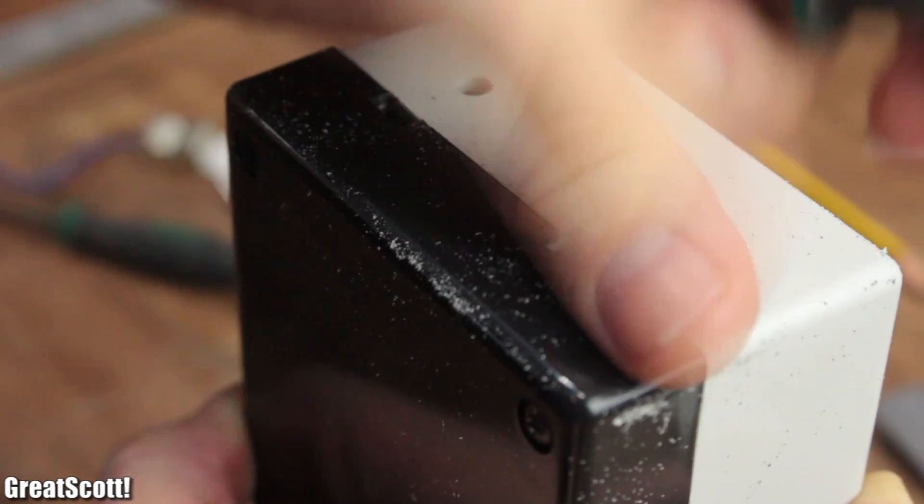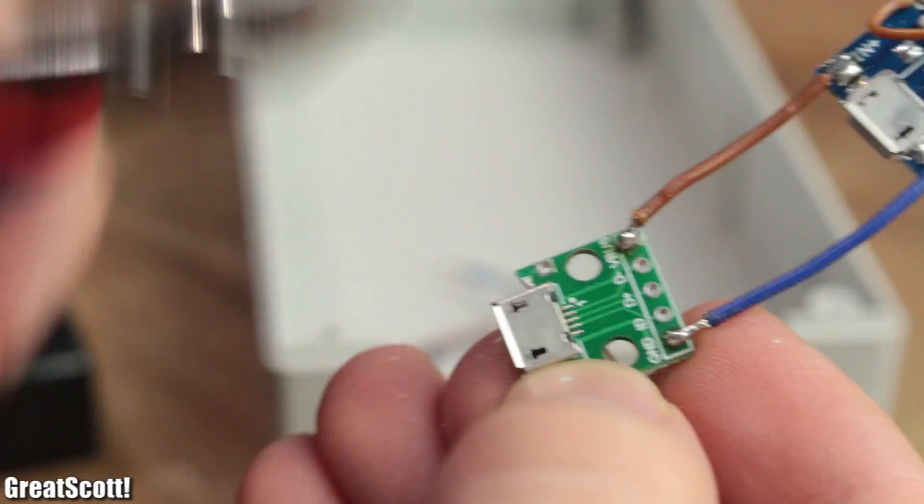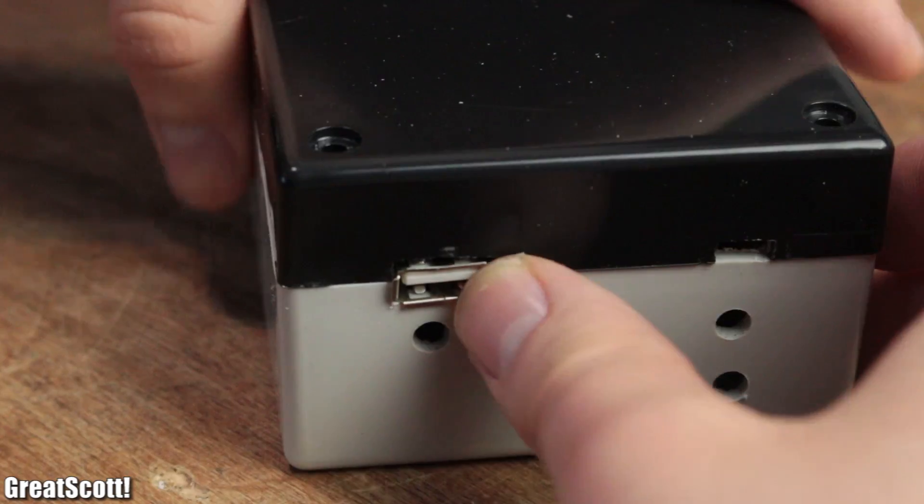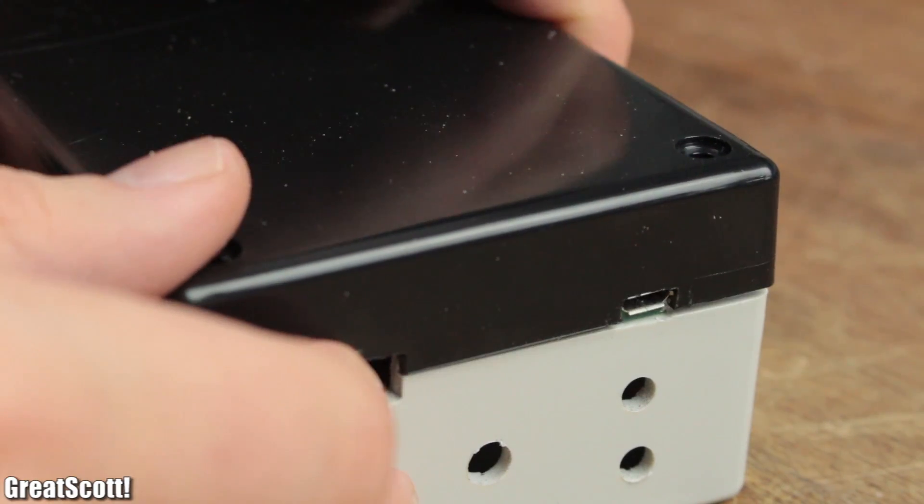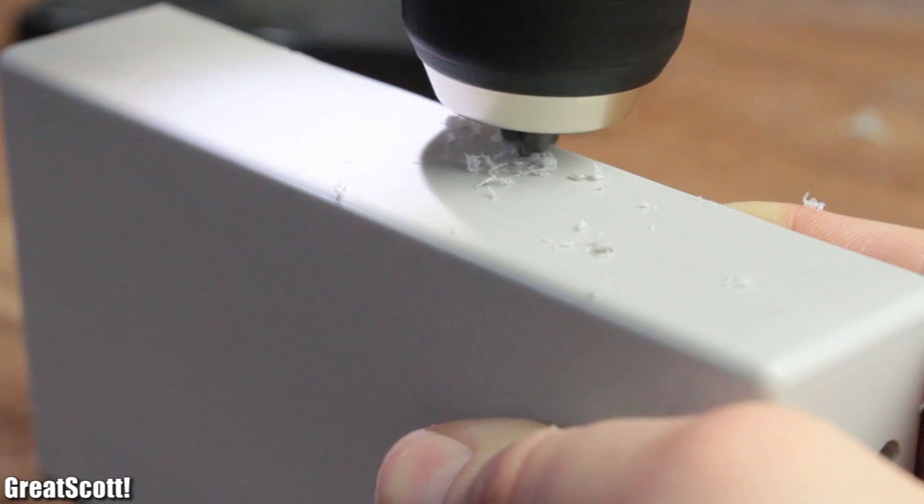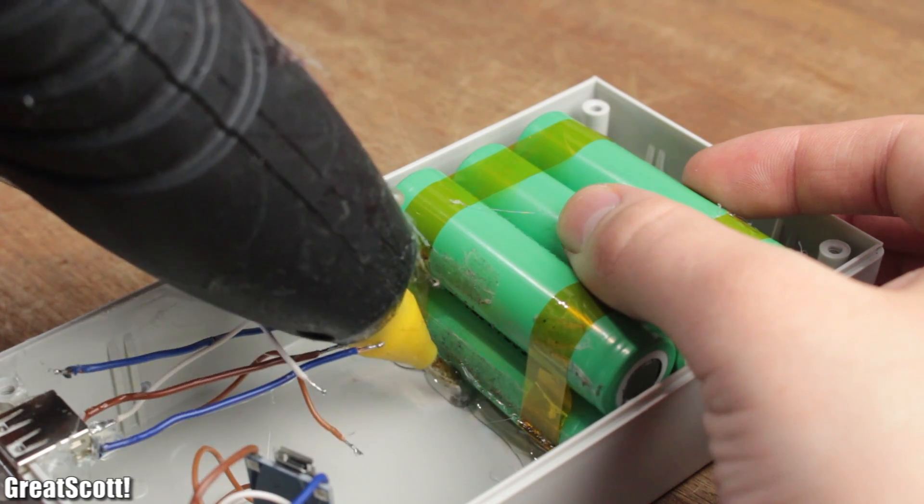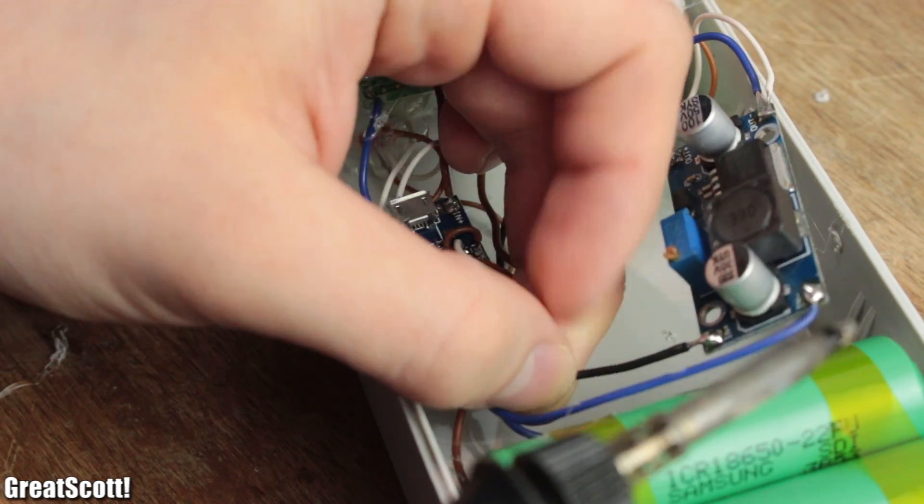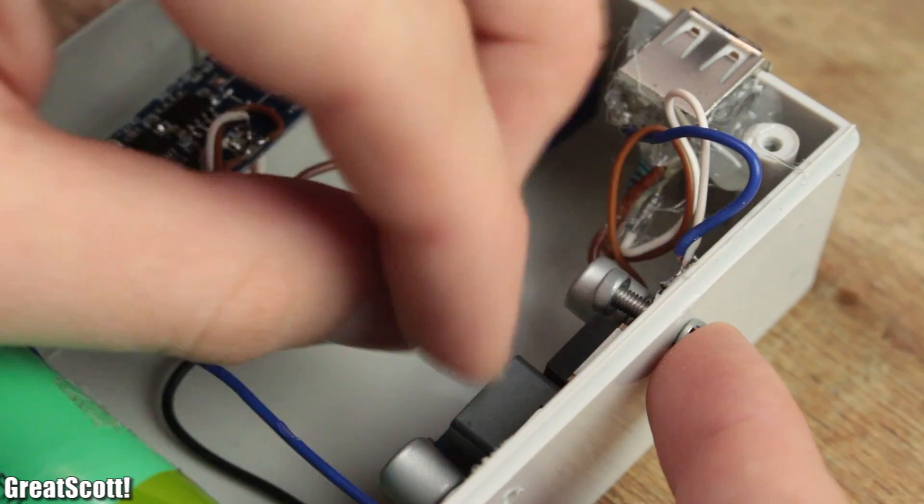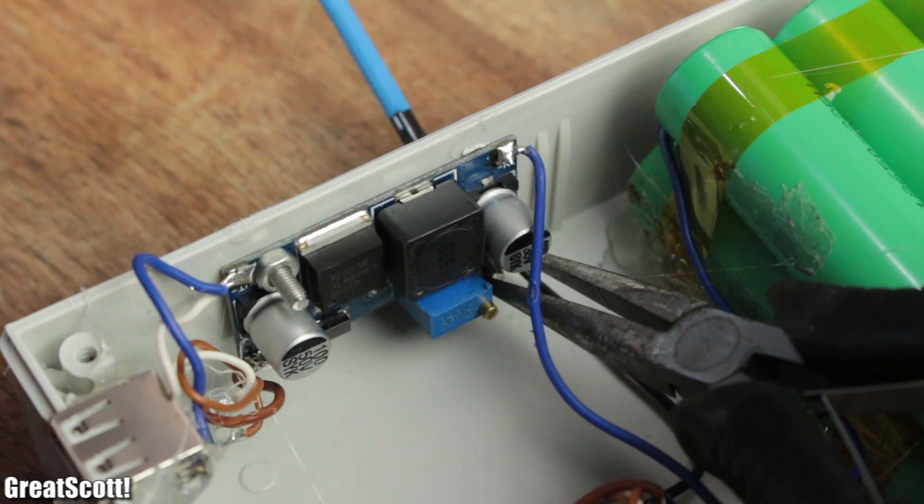After a bit of modification for the micro USB ports, they both fitted well and I continued by creating mounting holes for the boost converter. At the end I secured most of the components with the help of hot glue, repeated the same wiring as before, and finished this build by securing the boost converter to the side.